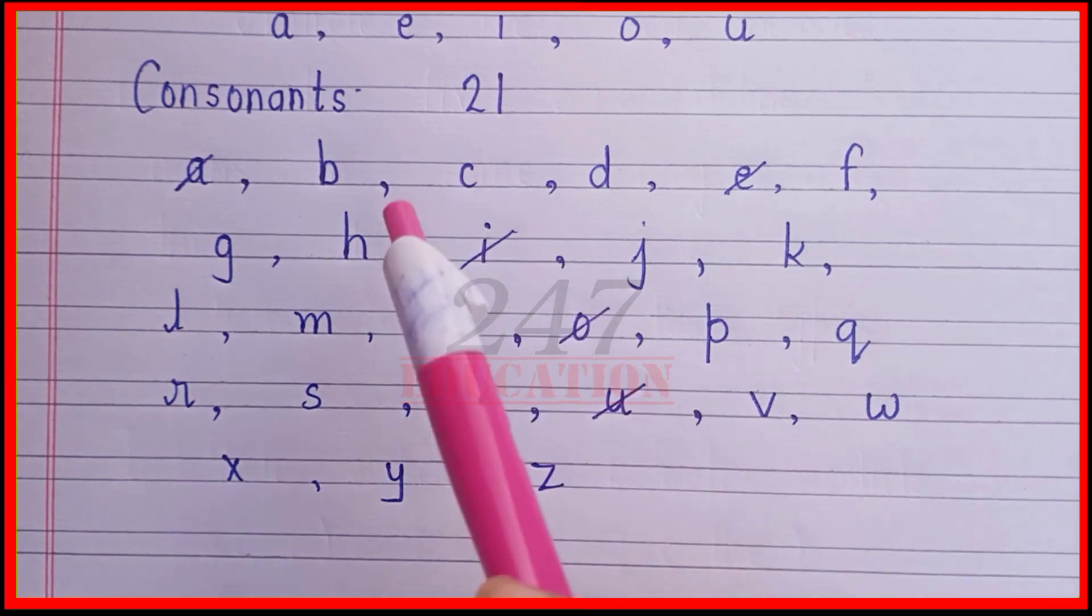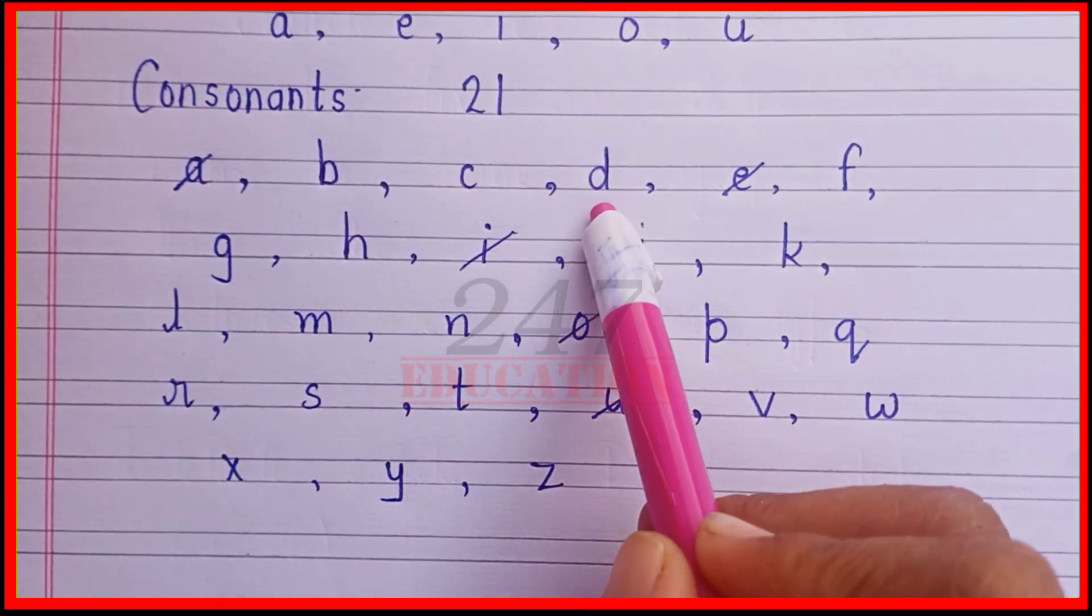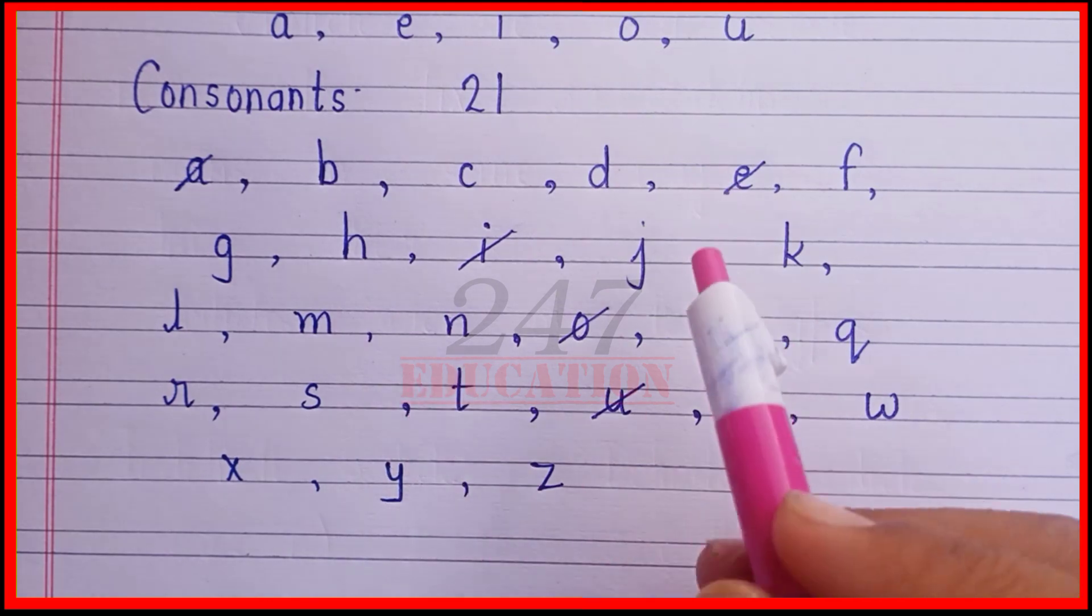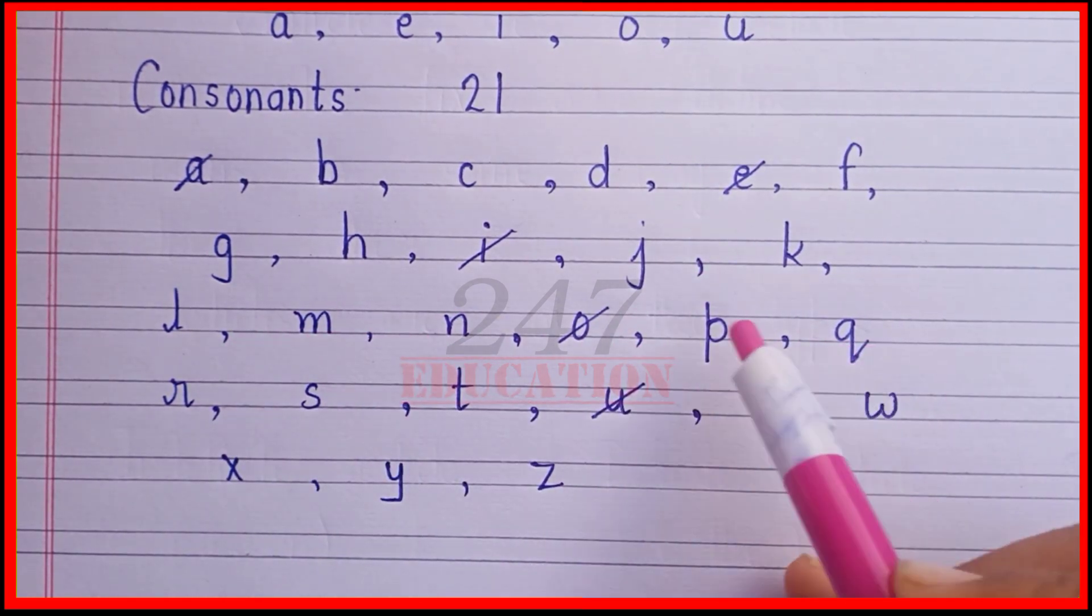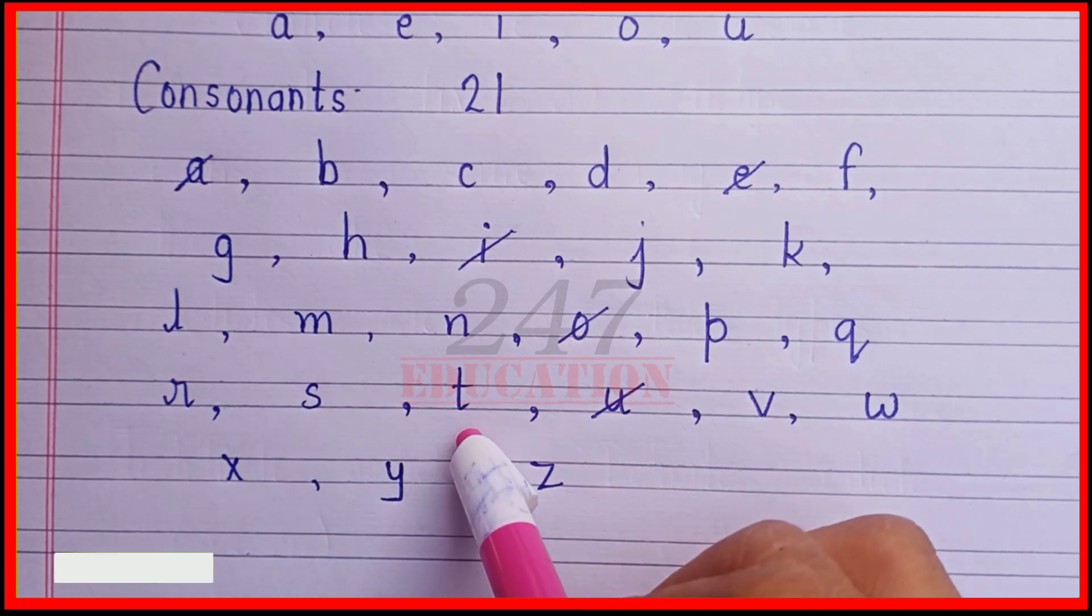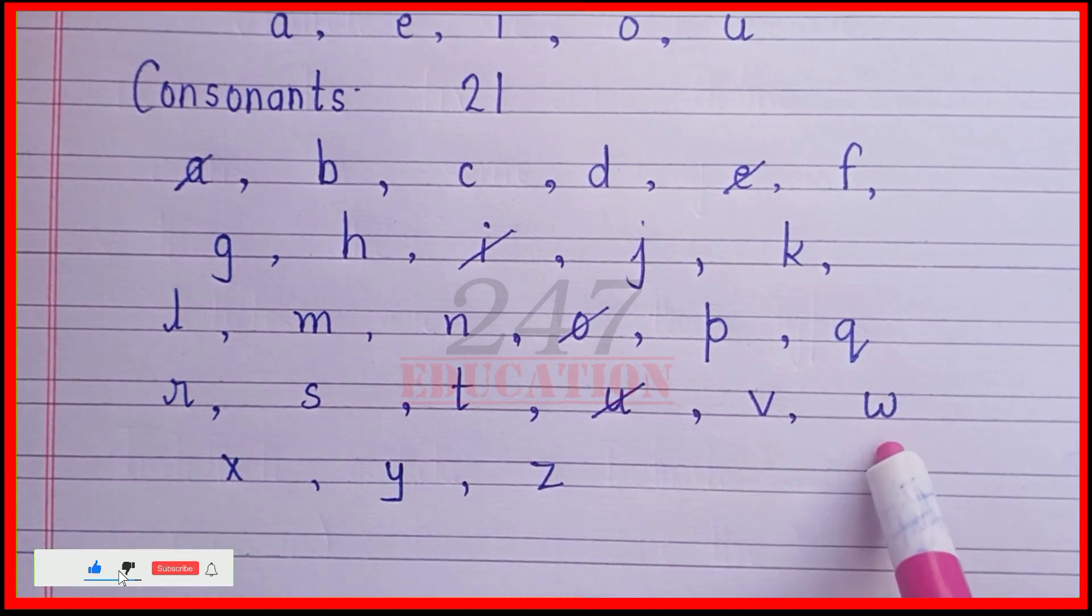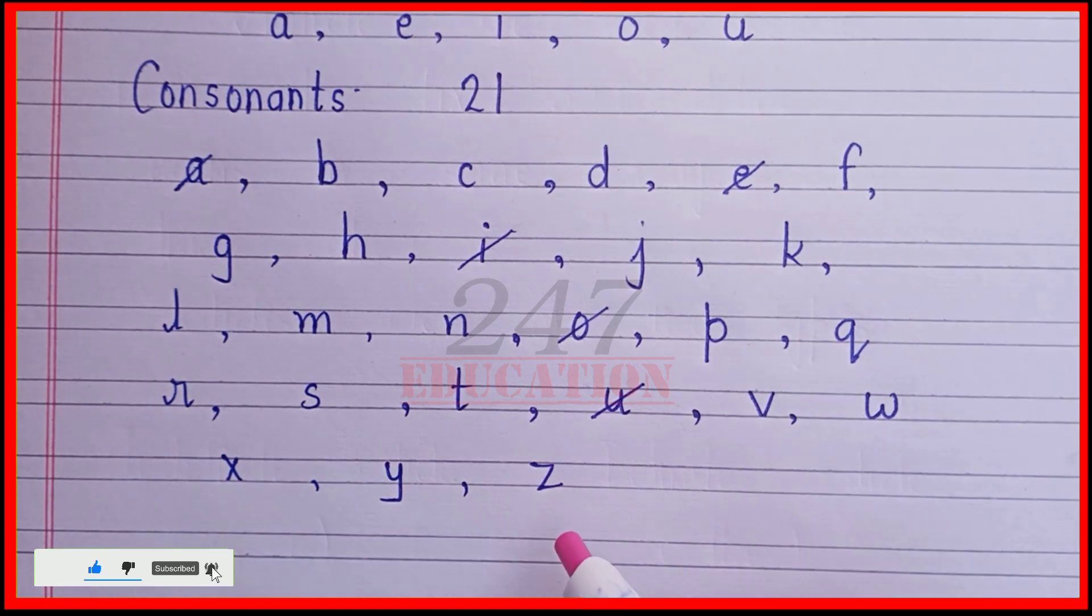So, our consonants are B, C, D, F, G, H, J, K, L, M, N, P, Q, R, S, T, V, W, X, Y, Z.